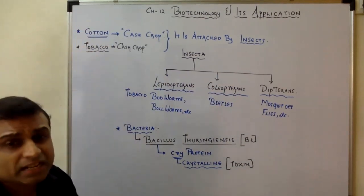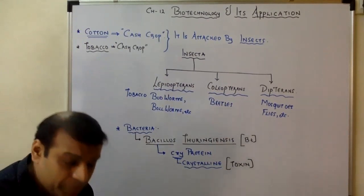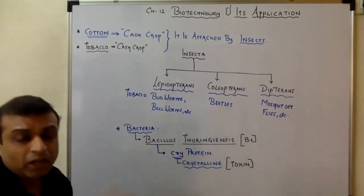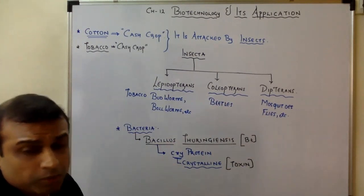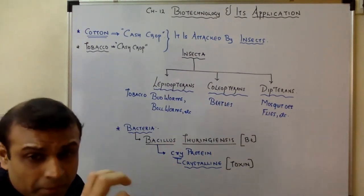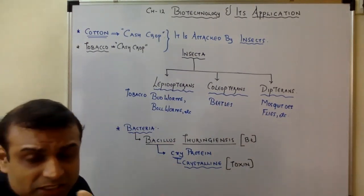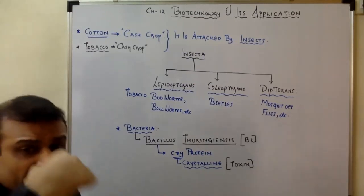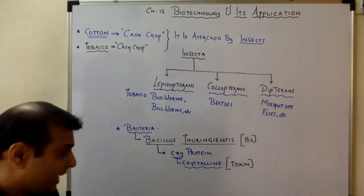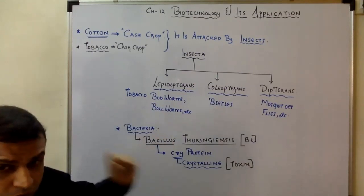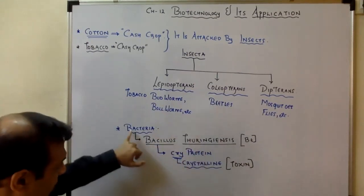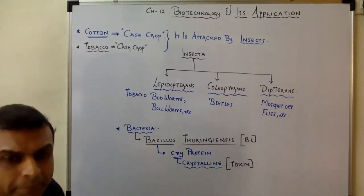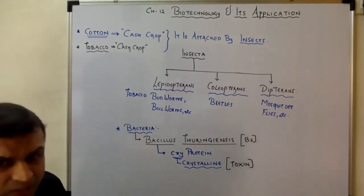We also used this same toxin to protect food crops like brinjal. We have a special variety of brinjal that resists these insects using this Bacillus thuringiensis-derived approach. Let us now see how we use this to prepare a genetically engineered cotton.